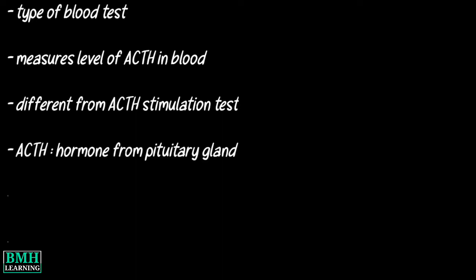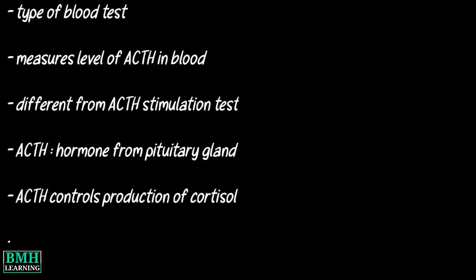ACTH is a hormone made by the pituitary gland. The hormone controls the production of another hormone called cortisol, which is made by the adrenal glands.